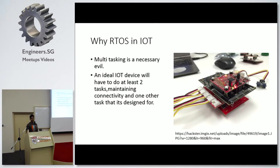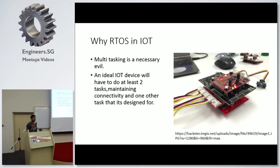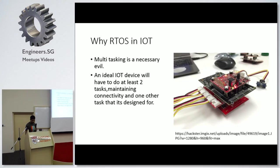Multitasking is a necessary evil. In IoT, especially with tiny devices, you can't have the device do just one thing. Ideally, an IoT device will do at least two things: one is maintain connectivity — be it Bluetooth, Wi-Fi, NFC, or LoRa — and the second is what it's actually designed for. You don't just design a device to connect to the internet; you want it to collect data like temperature, pressure, and whatever else.